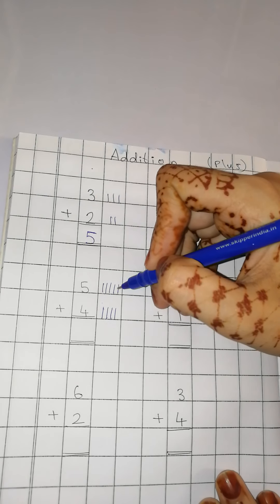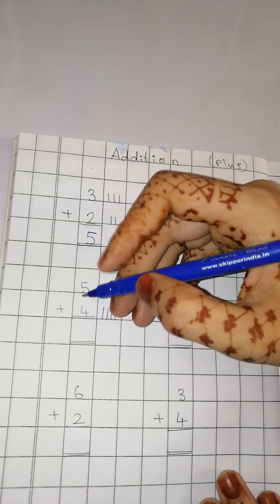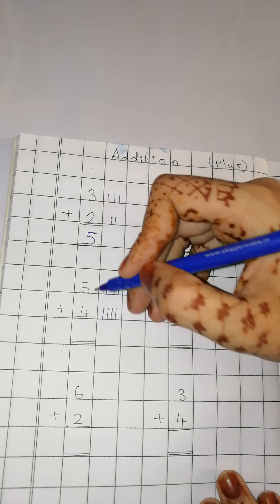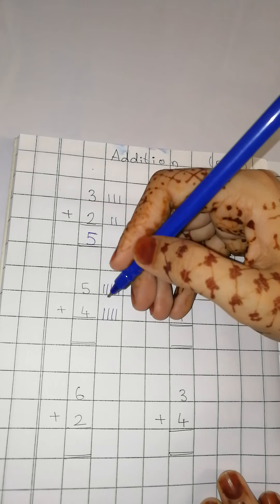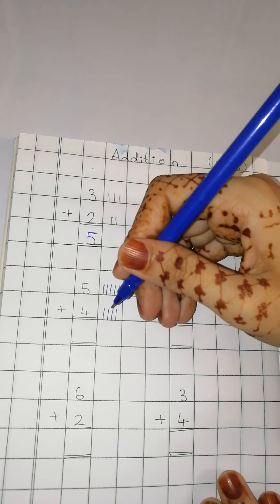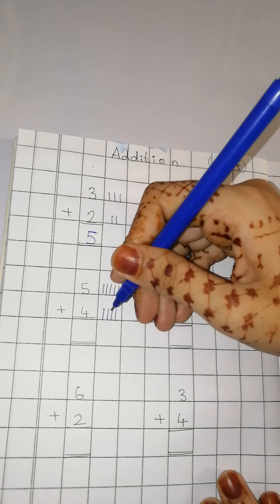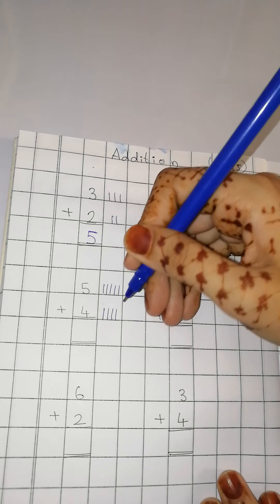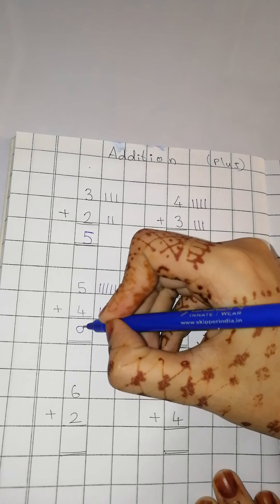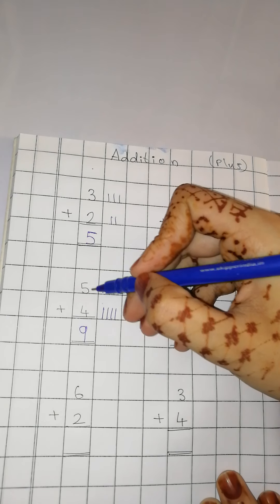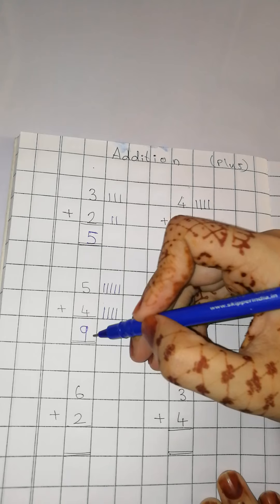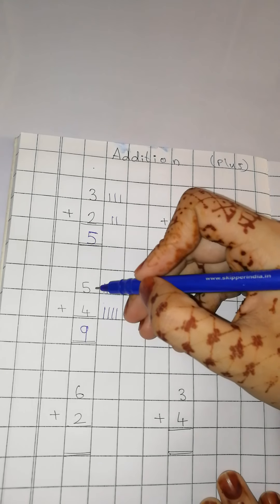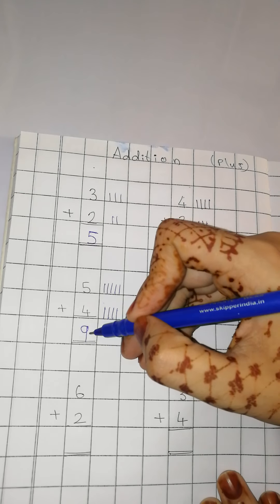Now upar ka number kitna hai? 5. 5 plus 4. So what comes after 5? After 5 comes 6, 7, 8, 9. 9. 5 plus 4 equals to 9.